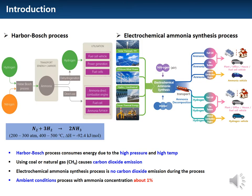However, the Haber-Bosch process now accounts for 90% of the world's ammonia production. This process demands high pressures and temperatures. In addition, ammonia production emits large amounts of carbon dioxide due to the use of natural gas. As an alternative, the electrochemical ammonia synthesis method is an eco-friendly process, which does not emit carbon dioxide because it reacts nitrogen and water at atmospheric pressure and low temperature to produce ammonia. However, the concentration of ammonia produced at low conversion rate is very low.